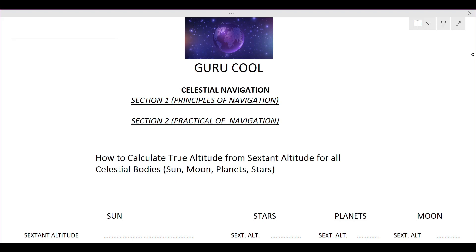Welcome to Gurukul. In this video series we will be covering all the topics important for the Second Mate's written exam. In this video we will cover only celestial navigation; for other subjects we will make separate video series. The celestial navigation paper has two sections: Section 1 covers principles of navigation with definitions, theoretical questions, and numerical problems. Section 2 is full of numerical problems like Longitude by Chronometer, Meridian Altitude, Latitude by Meridian Altitude, Polaris, Intercept Method, and more.